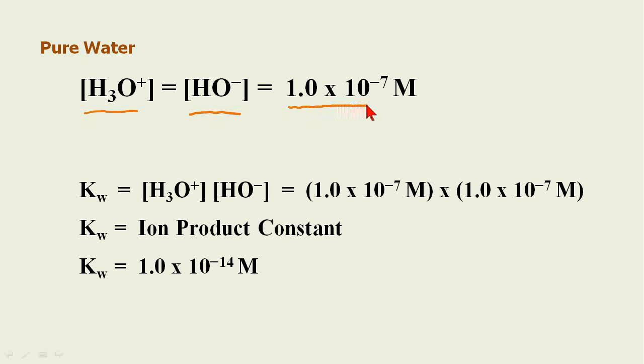In pure water, the concentration of the hydronium cation is exactly equal to the concentration of the hydroxide anion, and that is 1.0 times 10 to the minus 7 molarity. That gives us this very useful information which is not discussed in the sections you are reading.